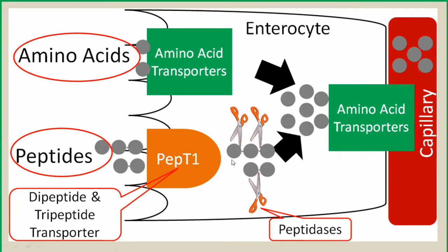These peptides enter inside the cell through this transporter. Inside the cell, peptidase enzymes are present in the intestinal cells. These peptidases break the peptide bonds present in the dipeptides and tripeptides. For example, in a dipeptide, the two amino acids are linked by a peptide bond, and the peptidase enzyme breaks this bond.